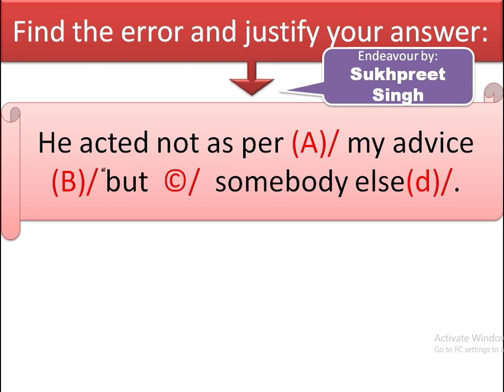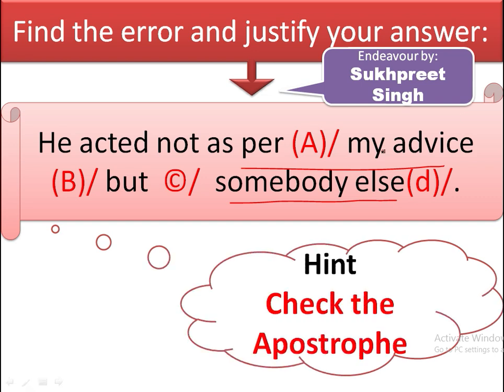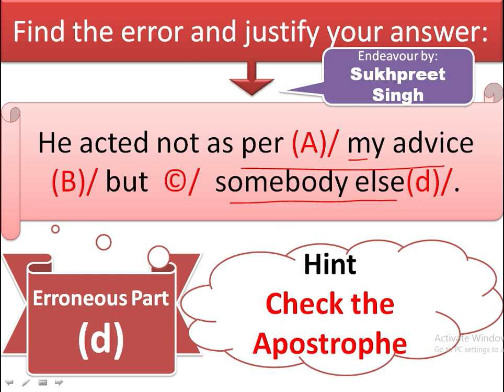The first sentence is: 'He acted not as per my advice but somebody else.' The sentence means that he received pieces of advice from different persons. He did not act according to my advice but according to the advice given by somebody else. Looking at this sentence, we see something is lacking — 'my advice' shows possession, but 'somebody else' does not. We can show possession using an apostrophe, and the erroneous part is D.